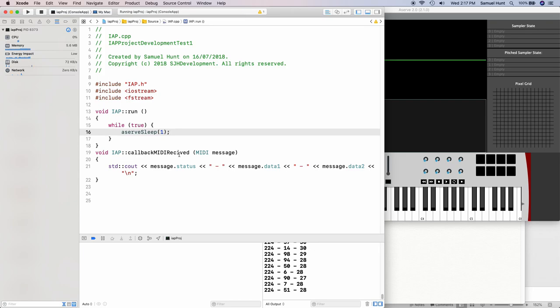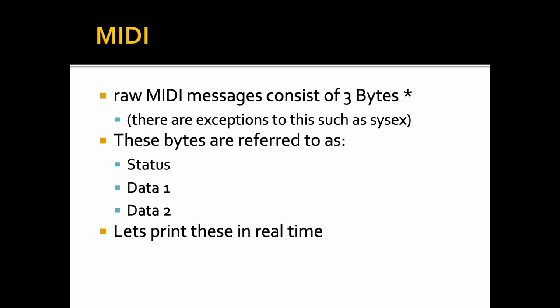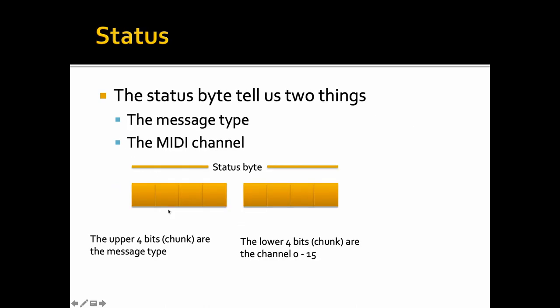You may be wondering why we use callbackMidiReceived rather than just the three normal callbacks. Basically, callbackMidiReceived can receive any type of MIDI message except sysex. The status byte tells us two things: the message type (what kind of MIDI message it is) and the MIDI channel it was sent on. The status byte is made of two four-bit pieces of information — the upper four bits are the message type and the lower four bits are the channel number. Because these are sent in one variable, we need to use bitwise operations to split them out.